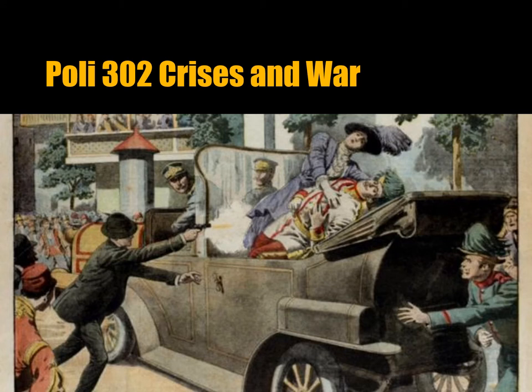Crises and War. Here you can see Gavrilo Princip, the Serbian nationalist student assassinating Archduke Ferdinand and his wife. Although they were both wearing bulletproof vests, they died. There was support in Serbia for Serbians living in Vojvodina and in Bosnia in the Austro-Hungarian Empire, and so there was irredentist pressure that they be given freedom.